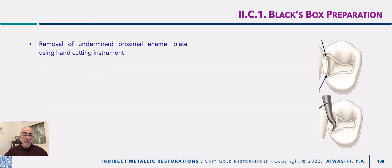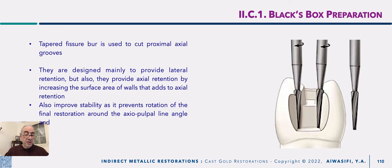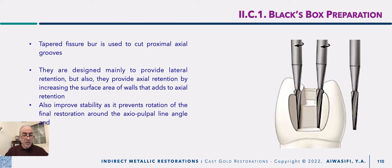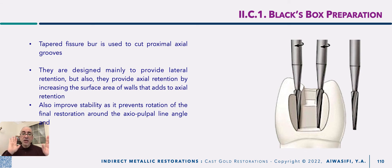After that, by using any hand cutting instrument like an enamel hatchet, gingival marginal trimmer — most favorable is the enamel hatchet — you cut the enamel plate using this hand cutting instrument, followed by refining using the tapered fissure bur. Also, the fine tapered fissure bur with its recommended divergency of five to eight degrees is used to cut the proximal axial grooves. The proximal axial grooves are cut by placing this fine tapered fissure bur at the axiobuccal and the axiolingual line angles, pressing it about half its thickness to create this groove.